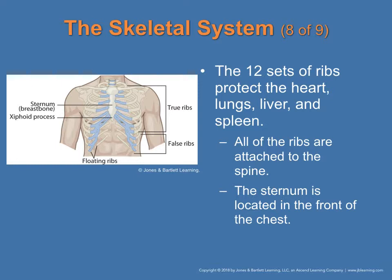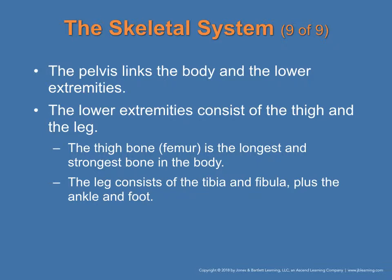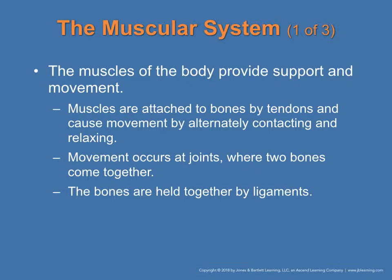There are twelve sets of ribs that protect the heart, lung, liver, and spleen. All ribs are attached to the spine posteriorly, and the sternum is located in the front of the chest. The pelvis links the body and the lower extremities together. The lower extremities consist of the thigh and the leg — the thigh bone is the femur, and the leg contains the tibia and fibula, then the ankle and foot.